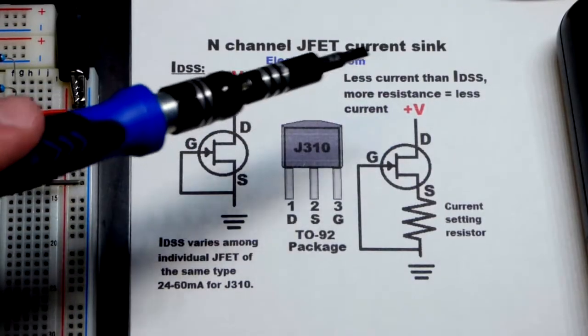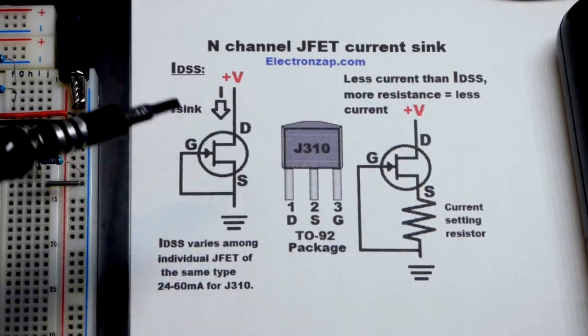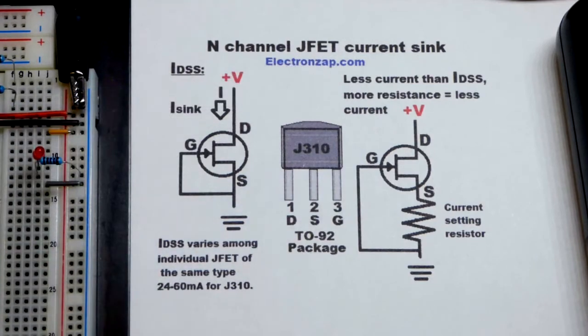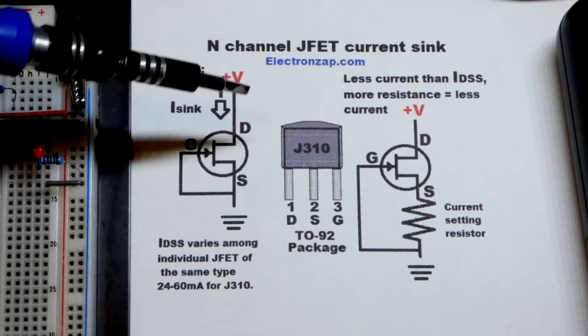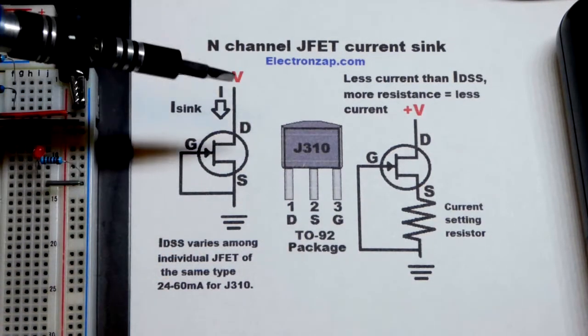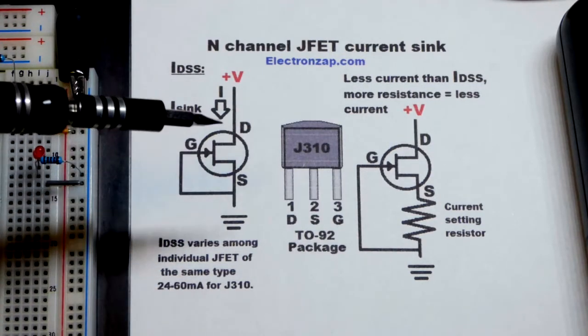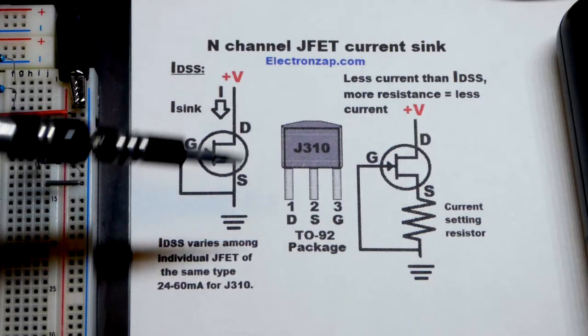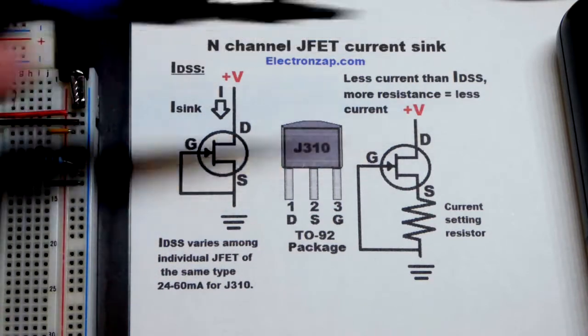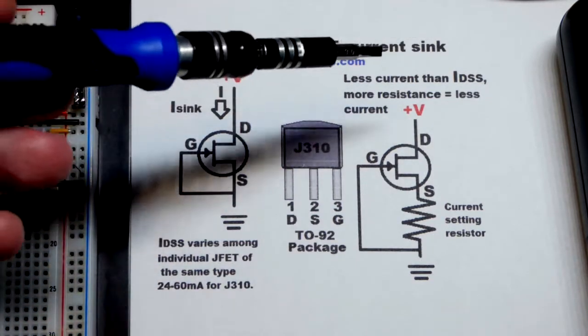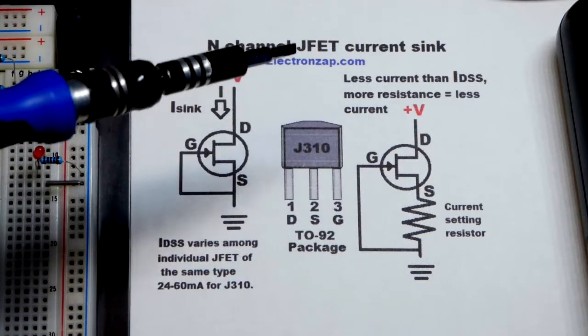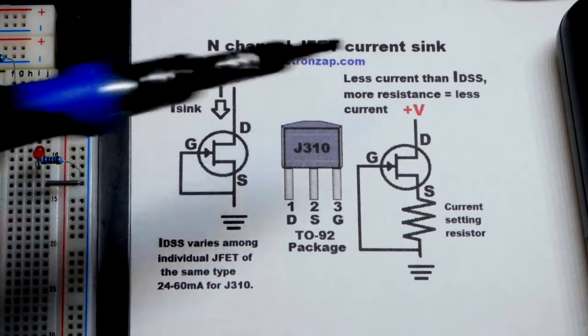So now in this video we're going to make a current sink using an N-channel JFET. Now anything that sets a current is commonly called a current source. So even though it's not technically sourcing current, we may still call this a current sink, but technically it's a current sink.